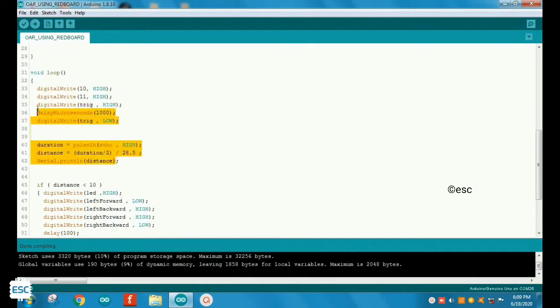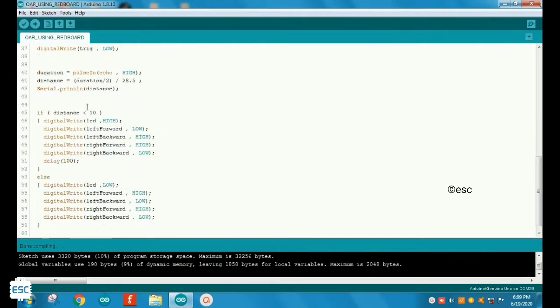In the loop section, first I read the distance of the obstacle, then I gave conditions for motors. In this case, I gave conditions to turn left if the obstacle is in 10 centimeter range, else go straight.